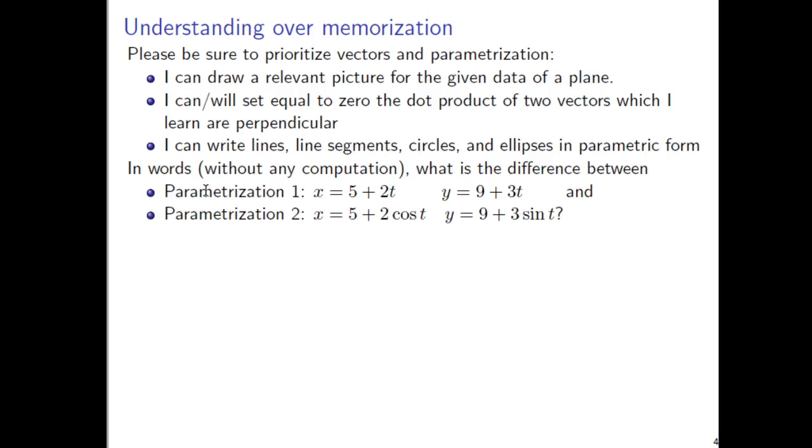In fact, in words, without any computation, you ought to just think to yourself, what is the difference between these two parametrizations? The first one is x equals 5 plus 2t, y equals 9 plus 3t. And the second is x equals 5 plus 2 cosine t, y equals 9 plus 3 sine t. Notice how similar these are. There's just the insertion of a cosine and a sine in the second parametrization.